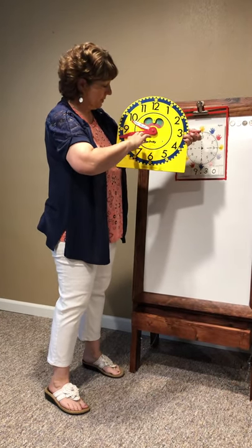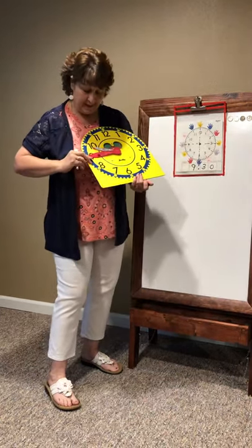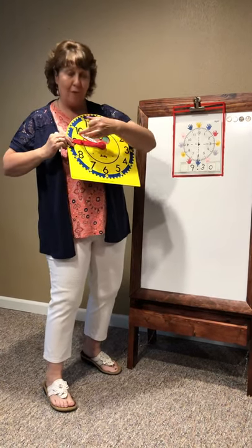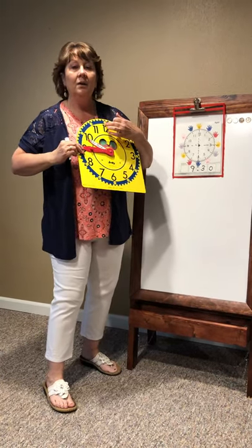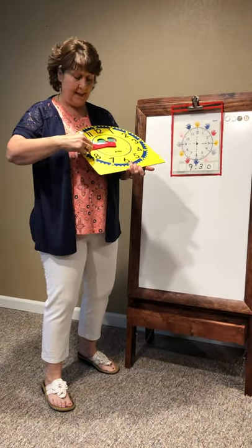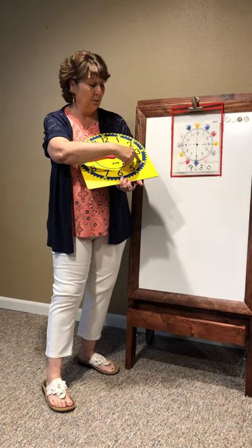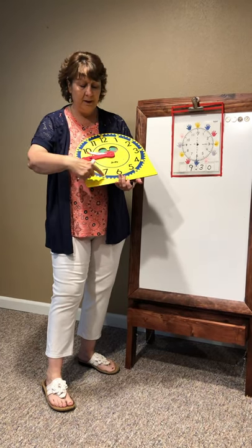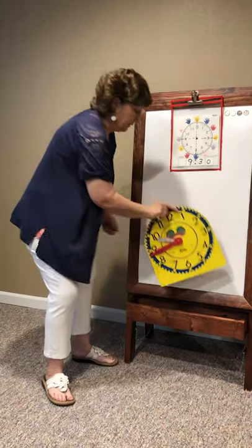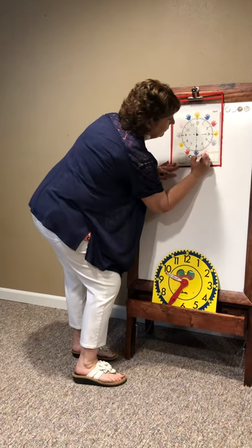If I go up here to the nine, there are a couple of ways people say this. They say a quarter to ten, because in 15 more minutes — a fourth of the way — you're going to be at ten o'clock. But the other way you can say this is to count by your fives: 5, 10, 15, 20, 25, 30, 35, 40, 45. So that time would be 9:45.